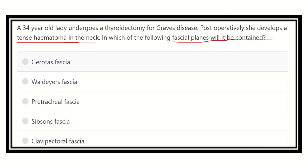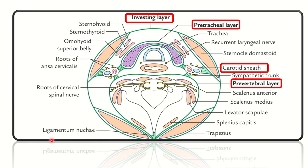First we need to identify the thyroid gland and the fascia which lies anterior to the thyroid gland, and find which fascial plane the hematoma would be contained in. The options are: Gerota's fascia, Waldeyer's fascia, pretracheal fascia, Sibson's fascia, and clavipectoral fascia.